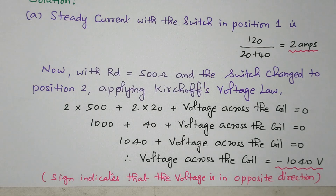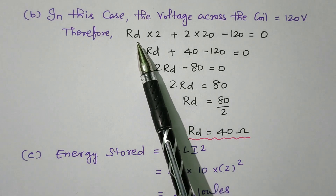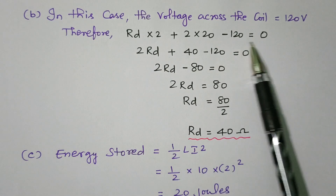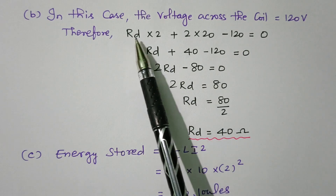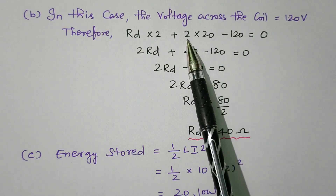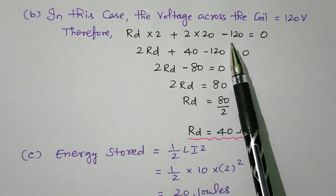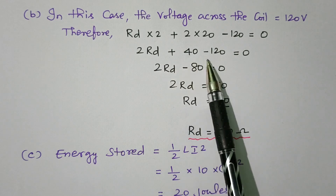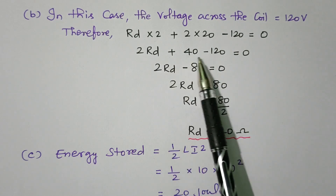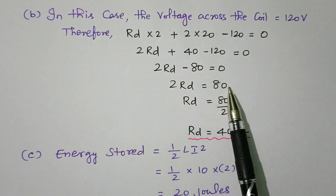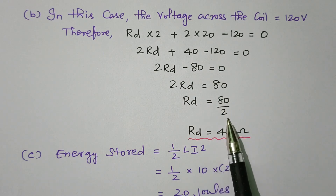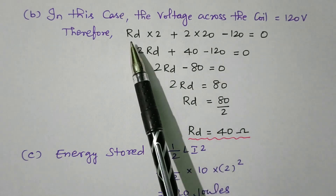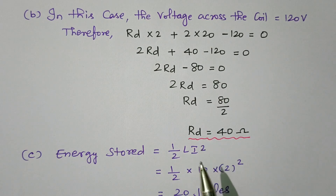Now for the second subdivision, we need to find the RD value when the voltage across the coil is reduced to minus 120 volts. Applying the same KVL: RD into 2 plus 20 ohm into 2 amperes minus 120 equals 0. So 2RD plus 40 minus 120 equals 0, giving 2RD equals 80, therefore RD equals 40 ohms. So in the second subdivision, with voltage given as minus 120 volts, we calculated RD as 40 ohms using Kirchhoff's voltage law.